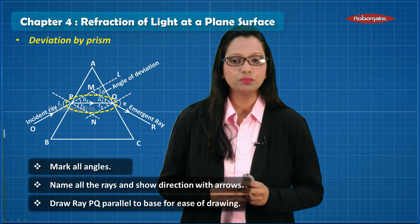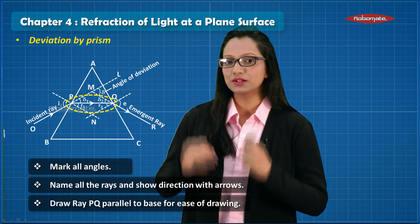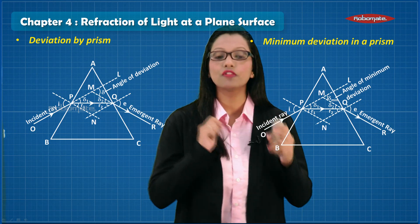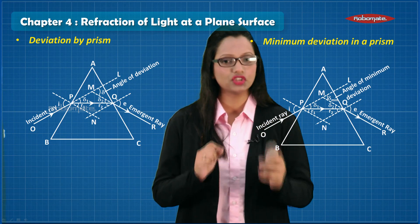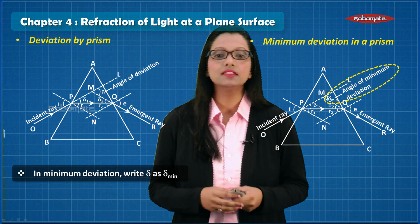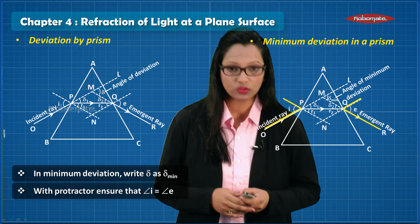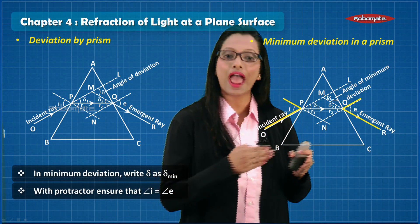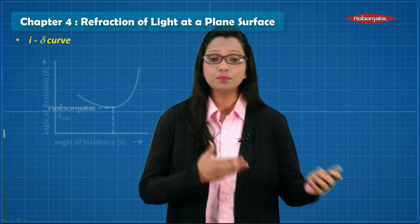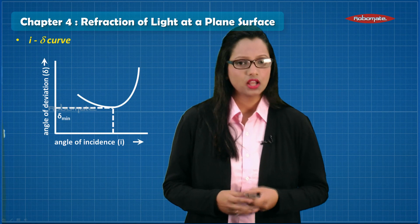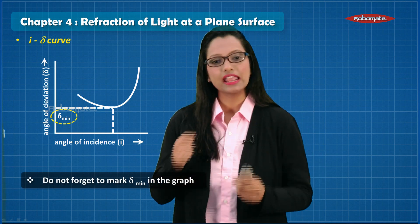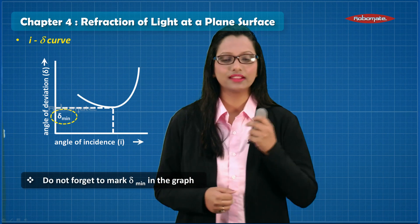For ease, draw the refracted ray PQ exactly parallel to the base. If the question asks for refraction of light through a prism in the position of minimum deviation, a few things need to change: delta is replaced by delta-min, and you must ensure with a protractor that the angle of incidence equals the angle of emergence. By default, ray PQ should be parallel to the base. Also support this with the i-delta graph — most students forget to highlight delta-min showing the angle of minimum deviation — and don't forget to label the y-axis and x-axis.